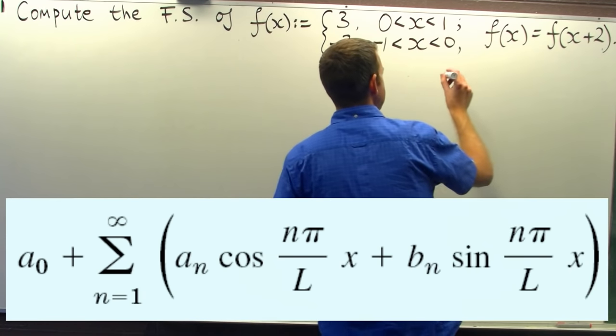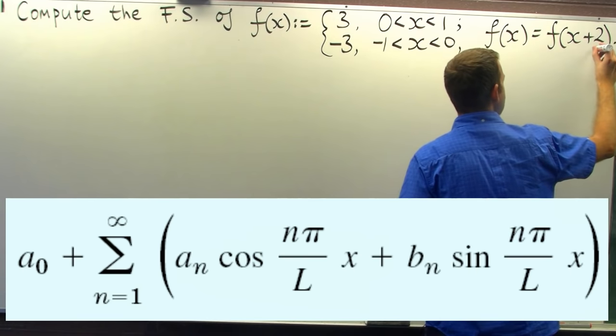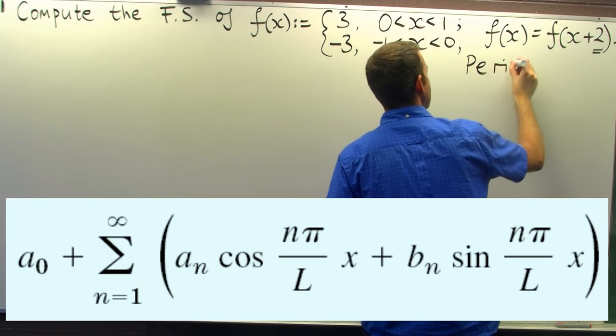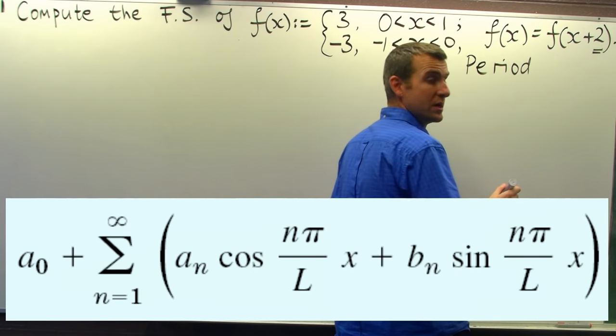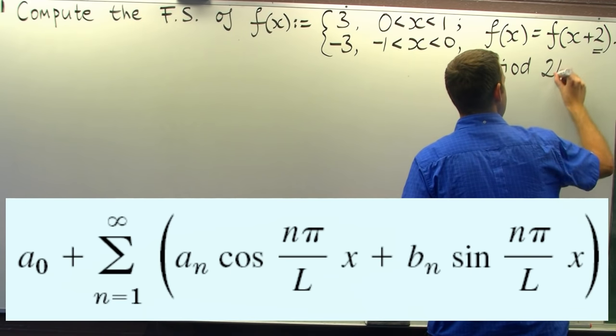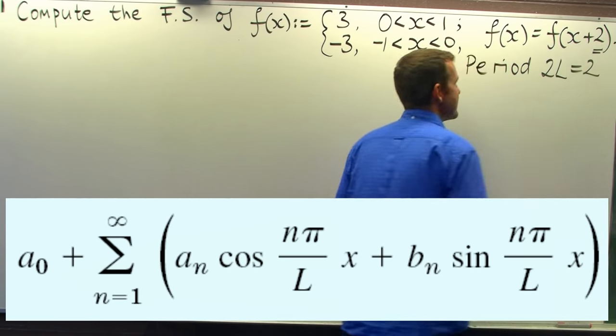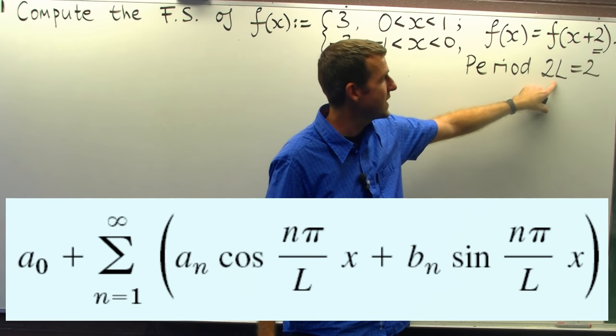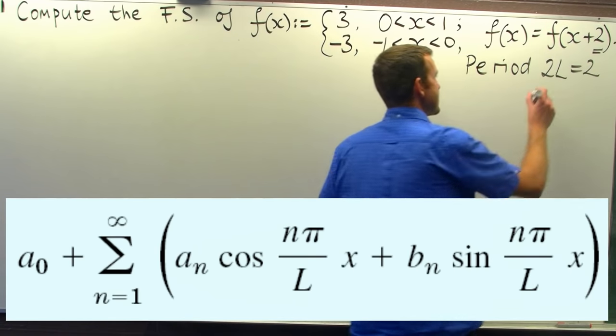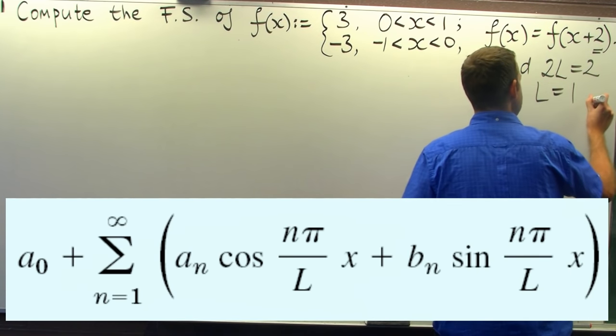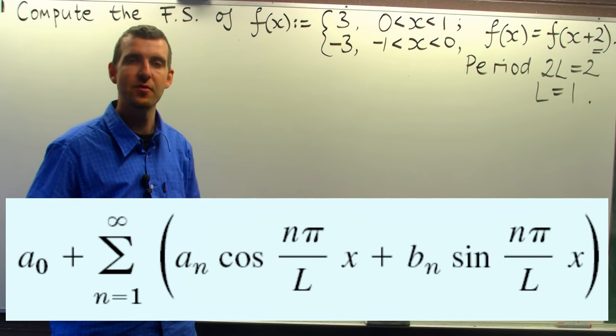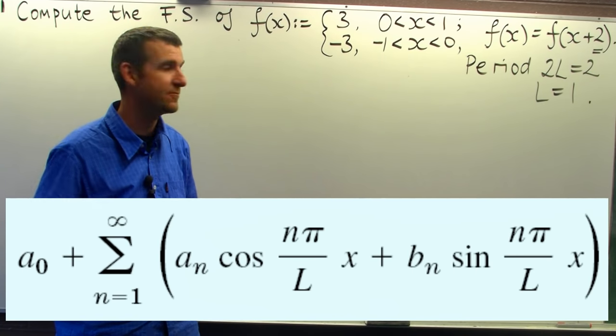So the first thing we note is that our function has period 2. Now we write the period or denote the period by 2L. So in this case, L equals 1. This is important for finding our Fourier coefficients.